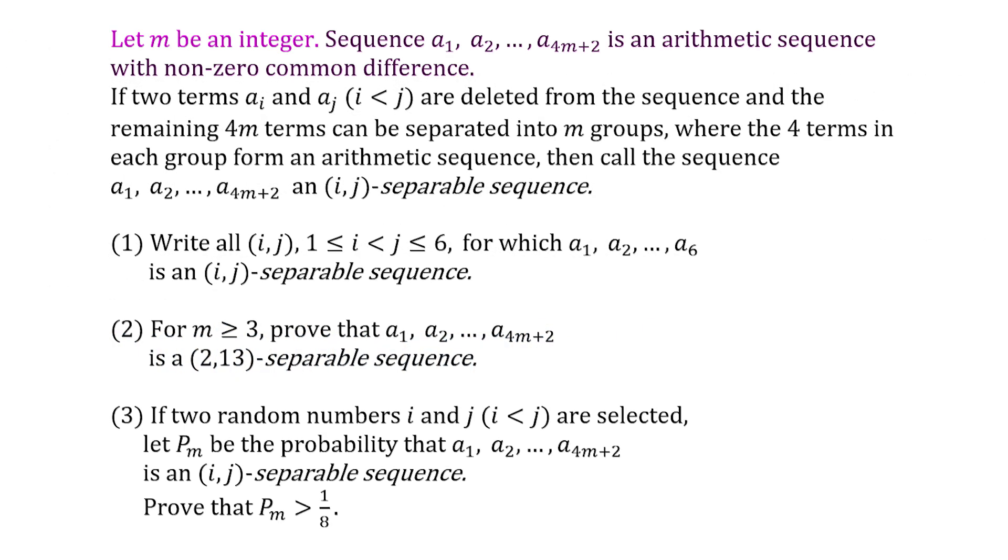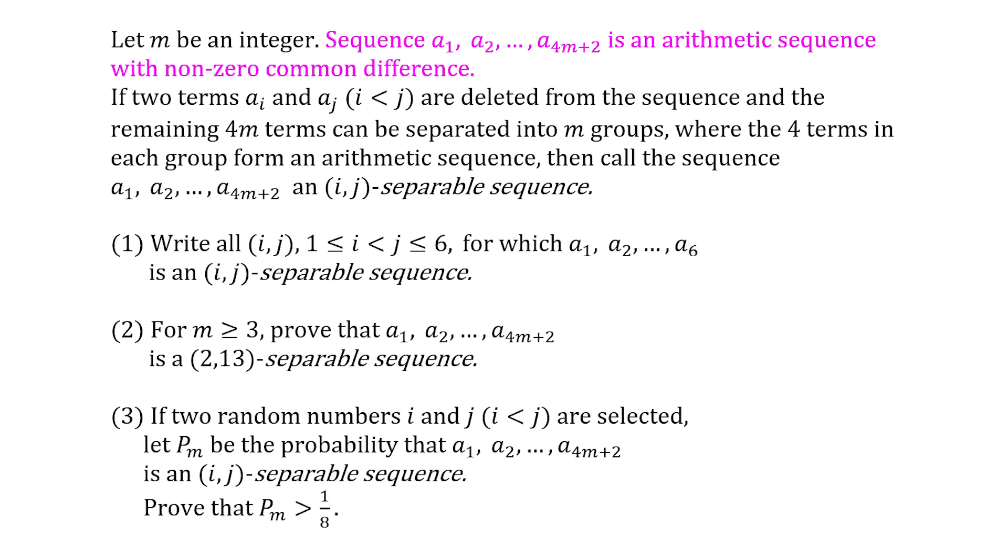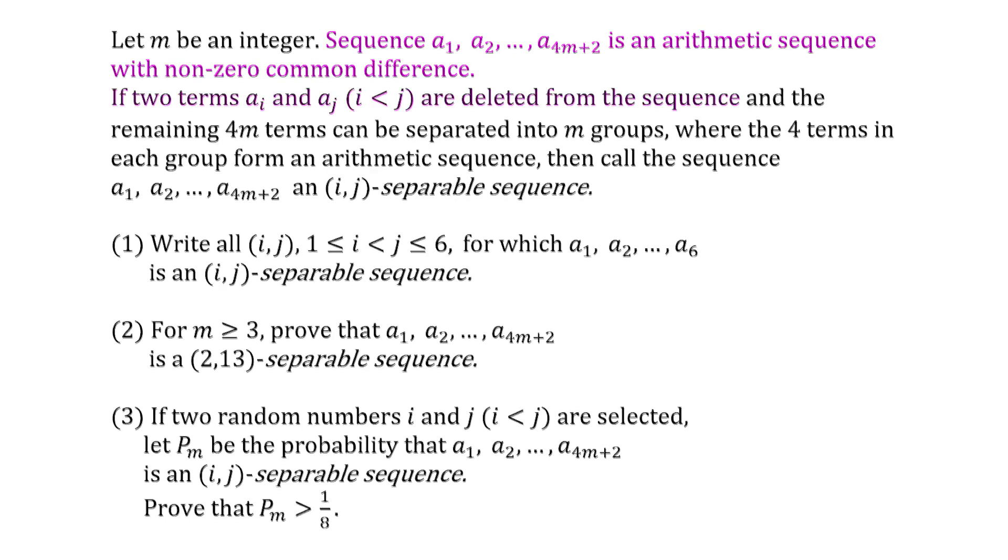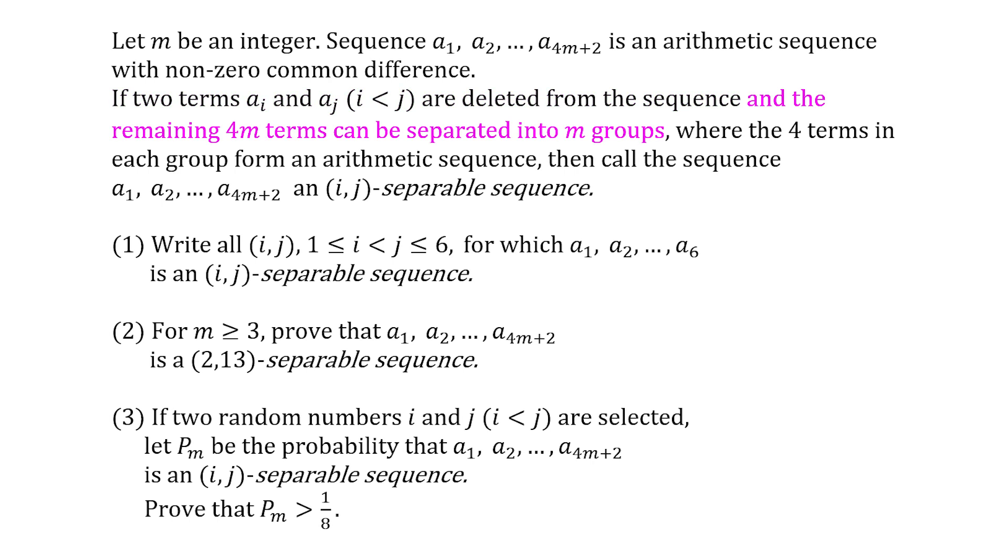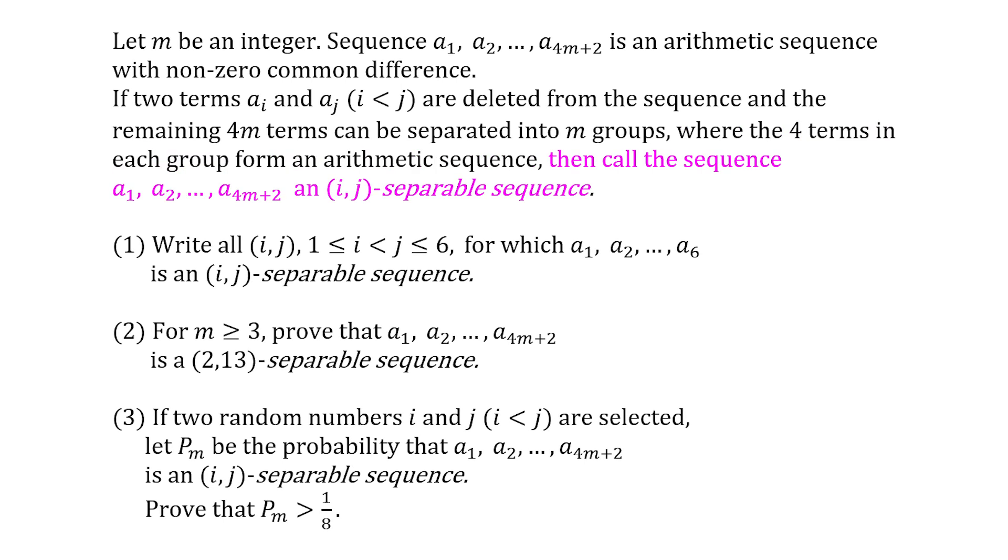Let m be an integer. Sequence a₁, a₂, ..., a₄ₘ₊₂ is an arithmetic sequence with non-zero common difference. If two terms aᵢ and aⱼ (i < j) are deleted from the sequence and the remaining 4m terms can be separated into m groups, where the 4 terms in each group form an arithmetic sequence, then call the sequence an (i,j)-separable sequence.